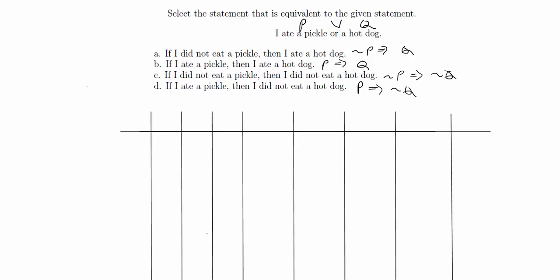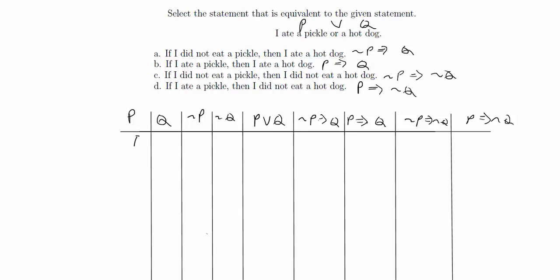Now we're ready to fill out our truth table. We have columns for P, Q, not P, not Q, then P or Q (our given statement), not P implies Q, P implies Q, not P implies not Q, and P implies not Q. Since we have two propositions each either true or false, there are four possibilities: P is true/true/false/false and Q is true/false/true/false. Not P is false/false/true/true, and not Q is false/true/false/true.